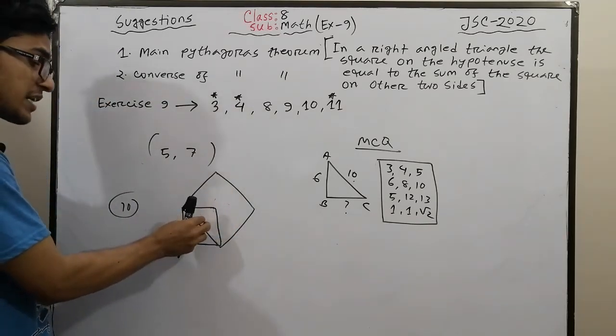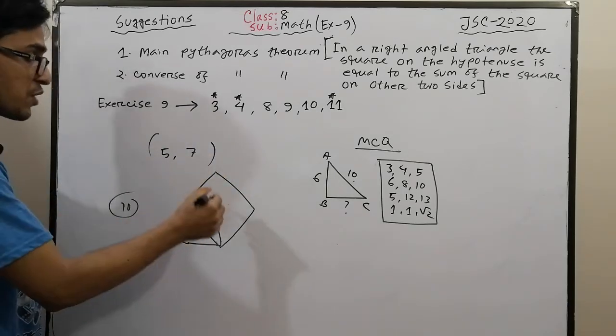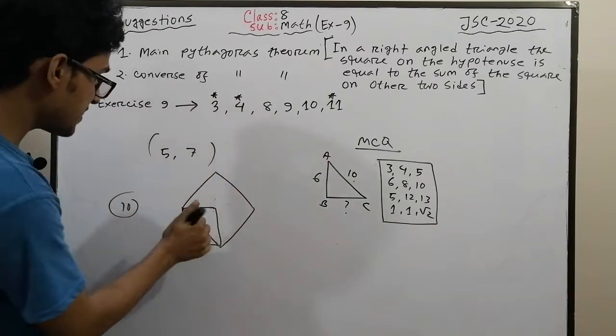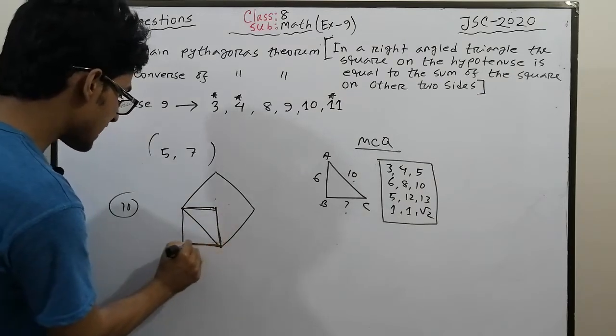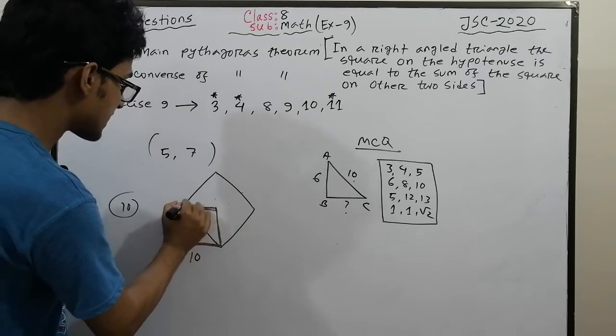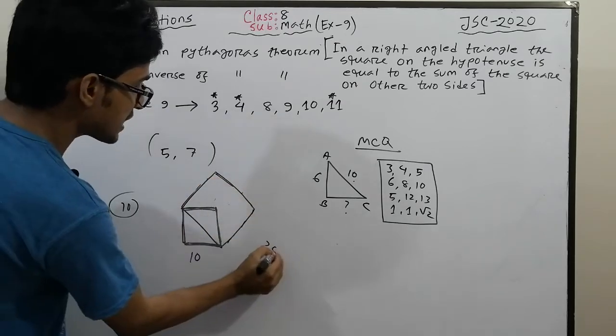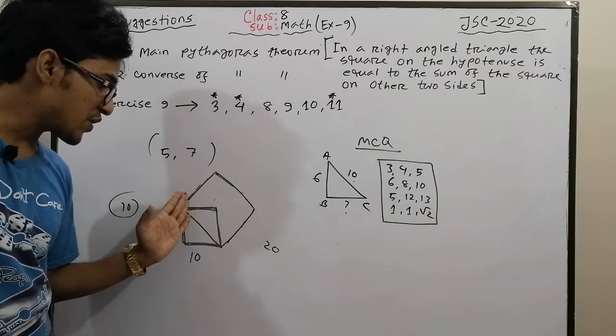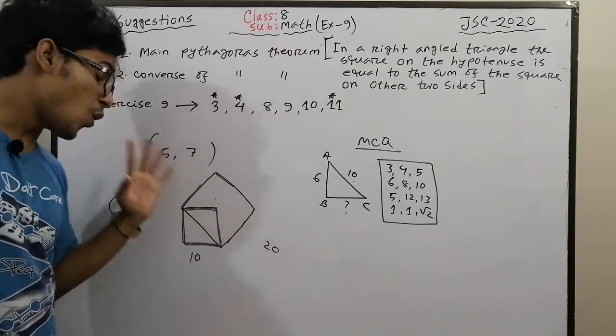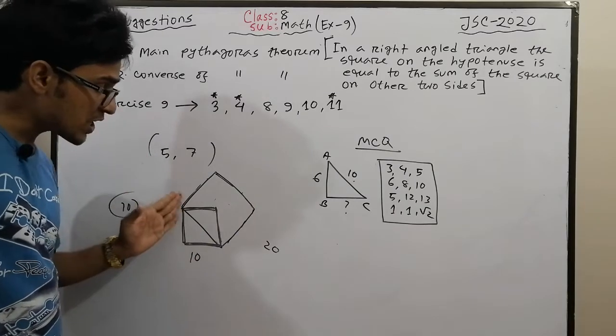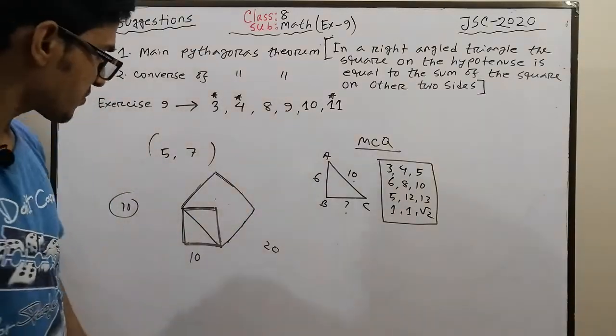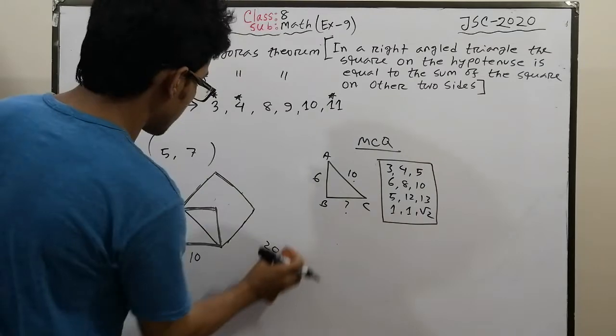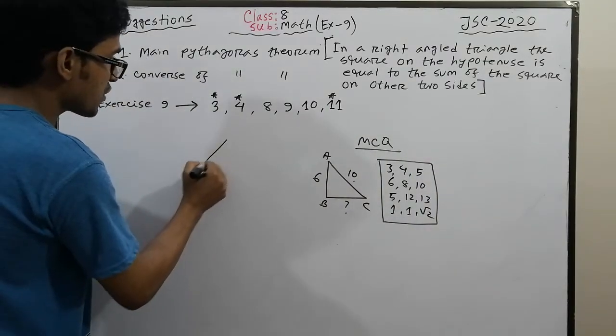The diagonal of a square creates a relationship: the diagonal area is half the square area, or the square area is double the diagonal area. This is an important topic. These concepts appear in exams, so understanding this relationship is crucial.